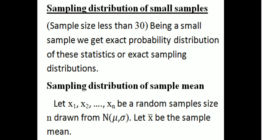Next, sampling distribution of small samples. For the sampling distribution of the statistic, or exact sampling distribution, when sample size is less than 30 — being a small sample — we get the exact probability distribution of the statistic, or exact sampling distribution of the sample mean.